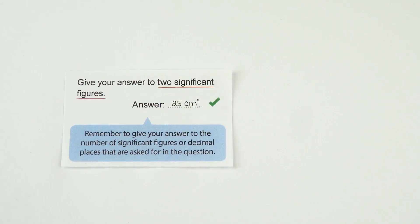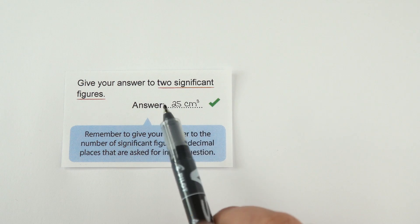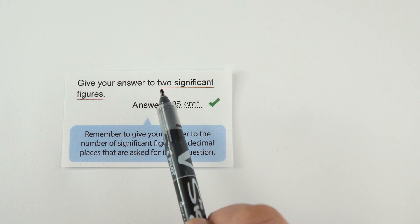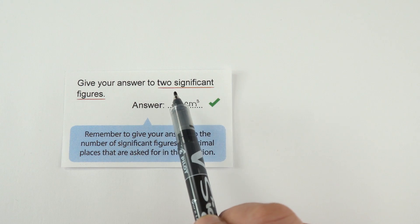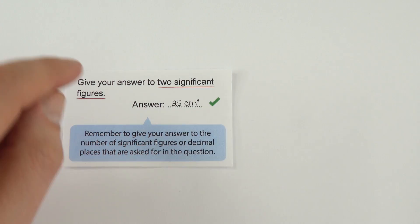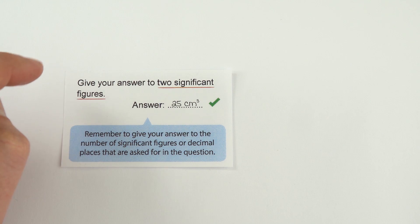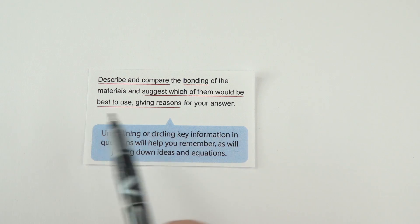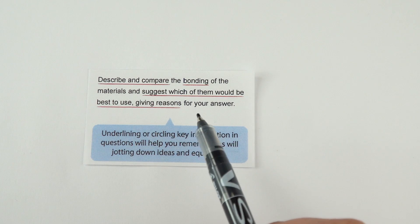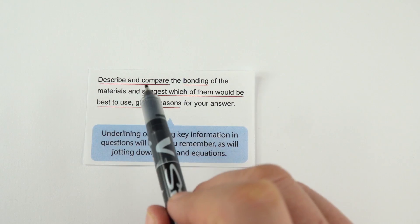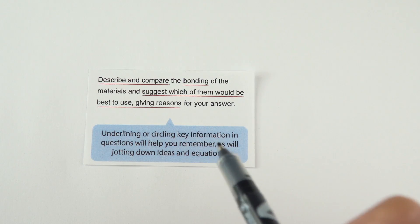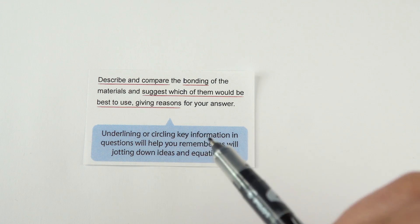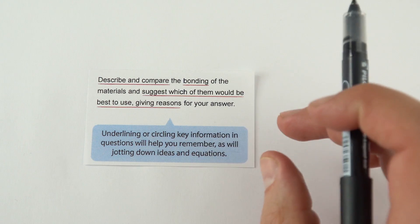You should always be reading the question, and you need to make sure that you answer the question they're asking. For example, if it says give your answer to two significant figures, then give your answer to two significant figures. Sometimes this is even in bold text. If it doesn't say how many significant figures, you should give it to the least amount of significant figures in the question, generally two or three. As you're working through, there's nothing wrong with highlighting or underlining things in the question. Anything that you can do to give yourself a better chance of actually answering the question they're asking is only going to help you in the long run.